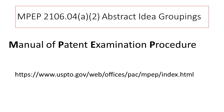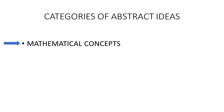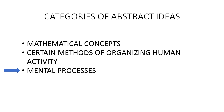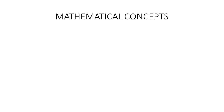Now let's jump into some categories or reasons that the patent office might find claims to be ineligible. The first reason is if the claim is basically nothing more than a mathematical concept. The second is if it covers certain methods of organizing human activity. The third reason is mental processes — is the claimed invention basically something that someone can do in their head?